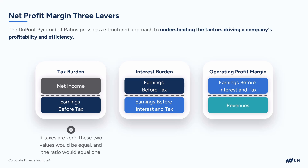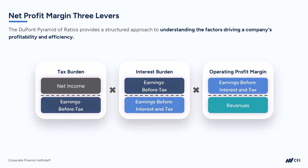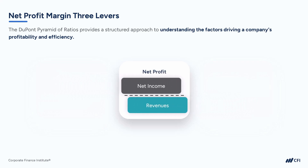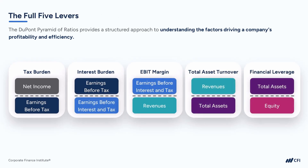Next comes interest burden, which is the ratio of earnings before tax to earnings before interest and tax. An interest burden ratio closer to one indicates that the company has little debt. Finally, we have the operating profit margin ratio, which is earnings before interest and tax divided by revenues. When we multiply these three ratios together, earnings before tax in the tax burden and interest burden cancel out, and so does earnings before interest and tax in the interest burden and operating profit margin ratios, leaving us with net income divided by revenue. This gives us five ratios that when all multiplied together actually give us return on equity.